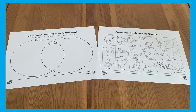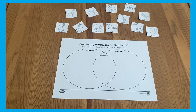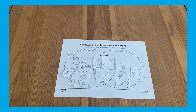This carnivore, herbivore, and omnivore chart improves learners' data handling maths skills while learning about animals' diets. Children need to cut out and place the animals correctly based on whether they eat meat, plants, or both, using the Venn Diagram.